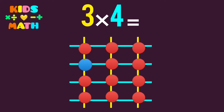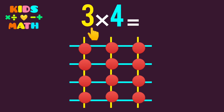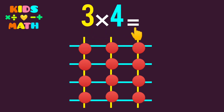We count: 1, 2, 3, 4, 5, 6, 7, 8, 9, 10, 11, 12. So 3 times 4 equals 12.